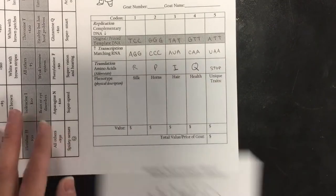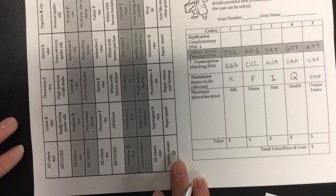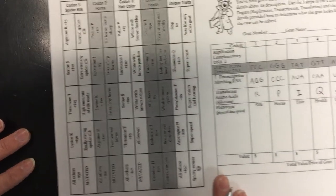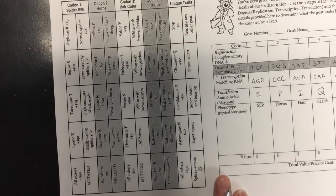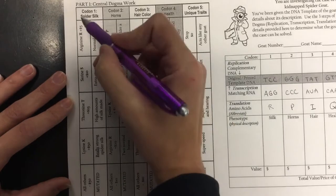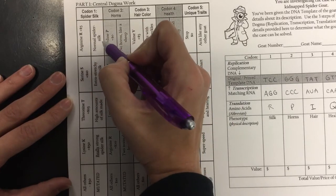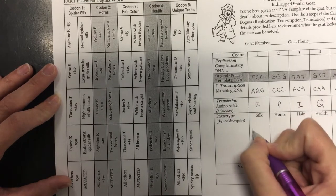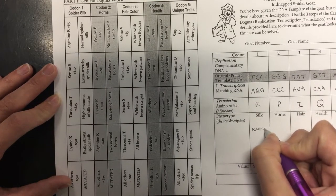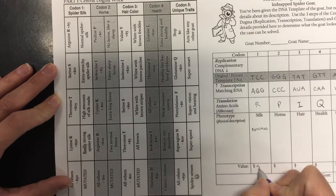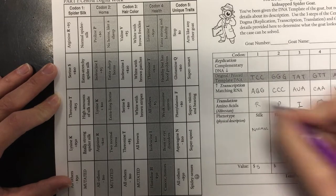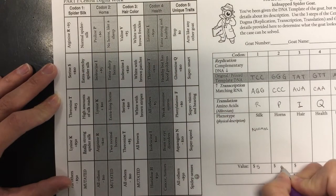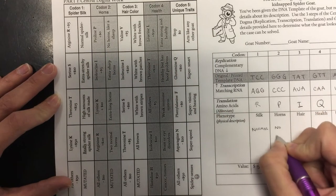So now that I know those, I look at my little chart over here. So my first codon — first column — I'm given the codon that translates to R. R is worth $5 and it gives me normal spider silk for that first codon. So my silk is normal and it's worth $5. My next one is proline, so I look at my second column over here, find proline — it's worth $0 because we have no horns.